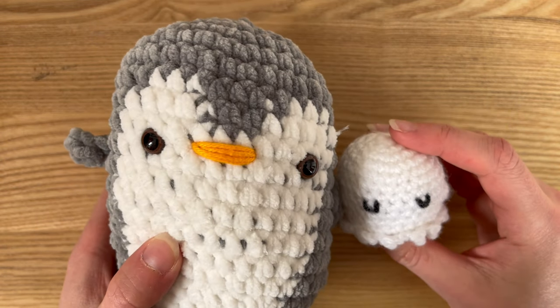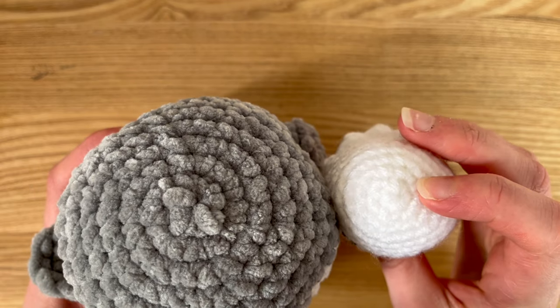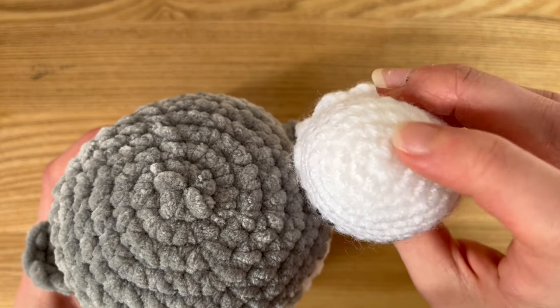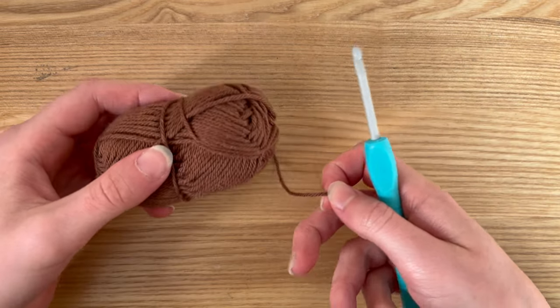An essential skill in crochet to start any animal craft is how to crochet an adjustable ring. This is how each of these start. You get your yarn or crochet cotton and a crochet hook.